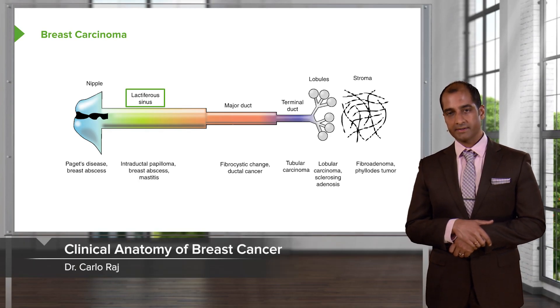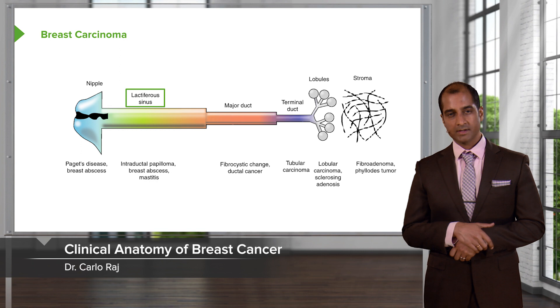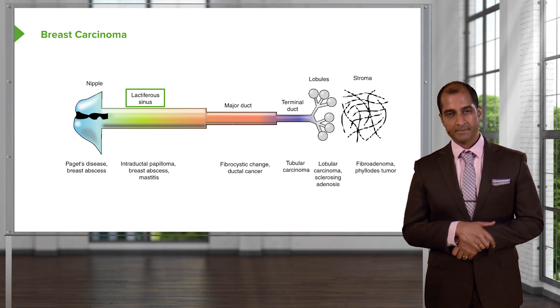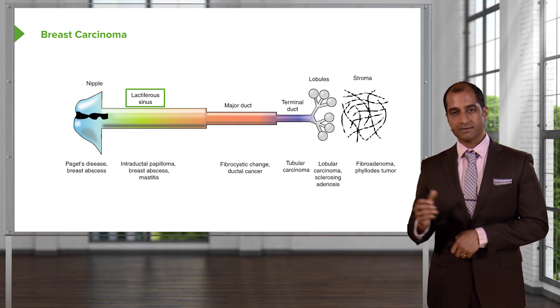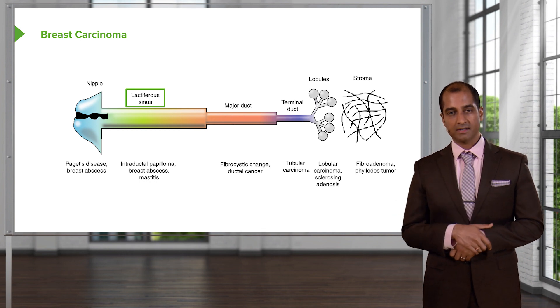I told you earlier that I would walk you through the clinical anatomy of breast cancer. On the left is your nipple. And as you move from the nipple all the way down to the stroma, we'll take a look at various pathologies underneath.